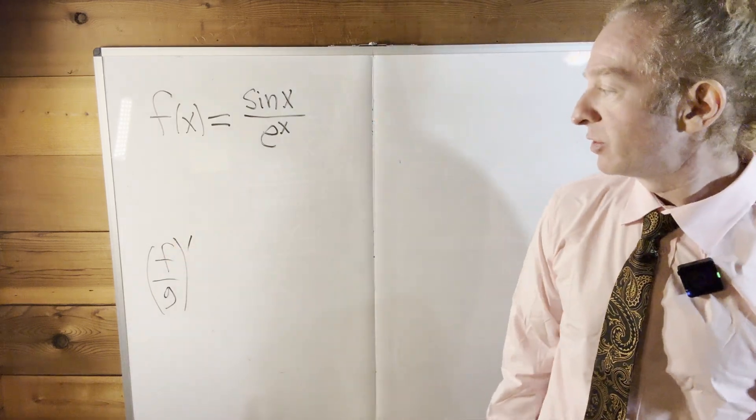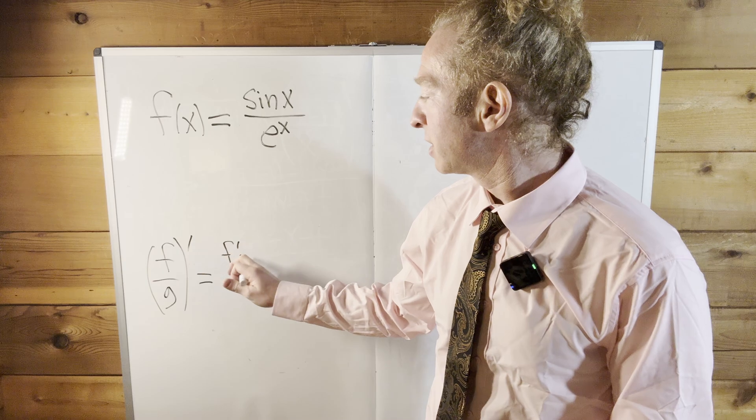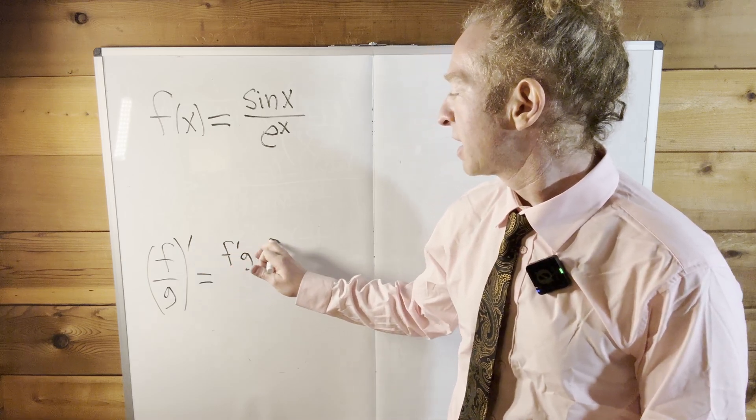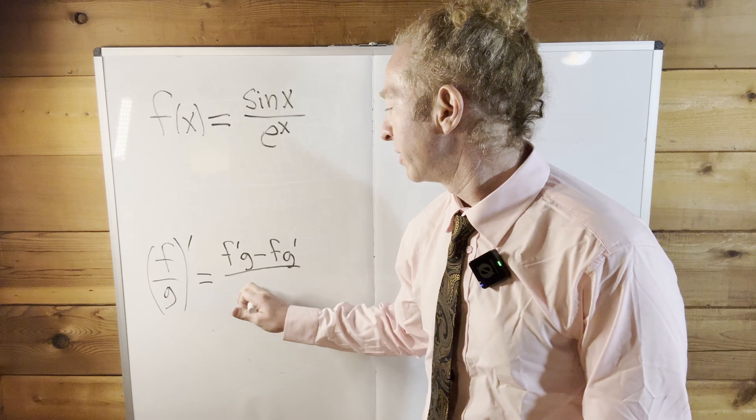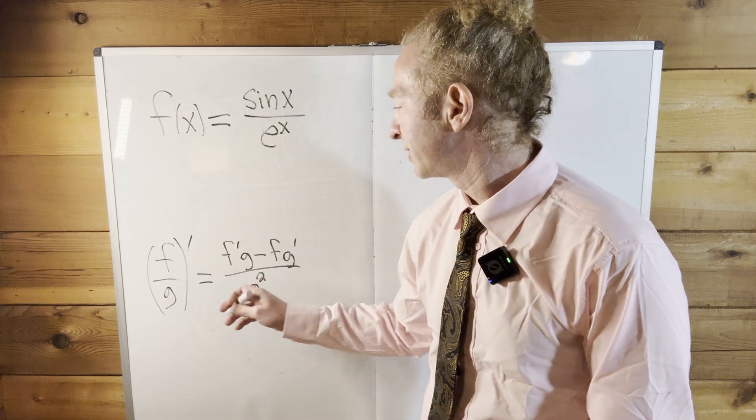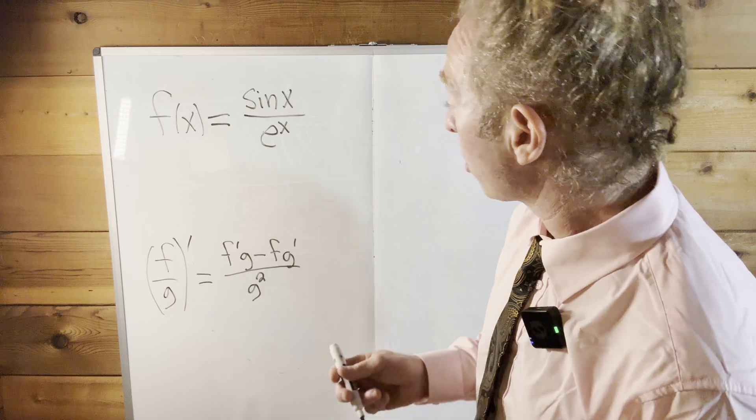We want the derivative. So the derivative of a quotient is the derivative of the top times the bottom minus the top times the derivative of the bottom over the bottom one squared. And I'm omitting the variable here just for simplicity, but that is the general formula for the quotient rule.